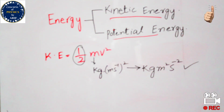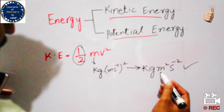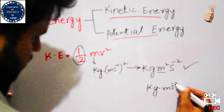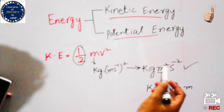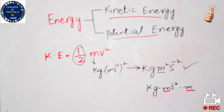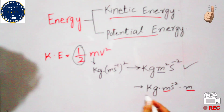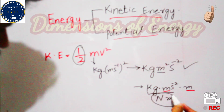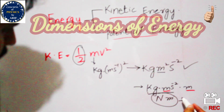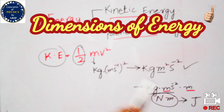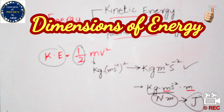To convert into SI units, we separate the m squared term: kilogram times meter per second squared, times meter. Since kilogram meter per second squared equals Newton, this becomes Newton times meter, which is Joule. So the SI unit of kinetic energy is Joule, equivalent to Newton meter or kilogram meter squared per second squared.